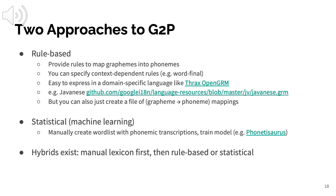This problem requires some human linguistic knowledge and generalization by a machine learning model. Usually you use an ML model trained on a dictionary with human-provided pronunciations. It's especially critical for loanwords, which tend to have unexpected relationships between spelling and pronunciation. In addition to statistical ML methods for G2P, you can also have rule-based G2P where you provide explicit rules to map graphemes into phonemes, including context-dependent rules — for example, if a letter appears in word-final position it's pronounced one way, but in other contexts differently. Domain-specific languages like THRAX and OpenGRM are used for this, but TSV files also work — and typically you'd see hybrid systems with a manual lexicon plus a rule-based or statistical component.